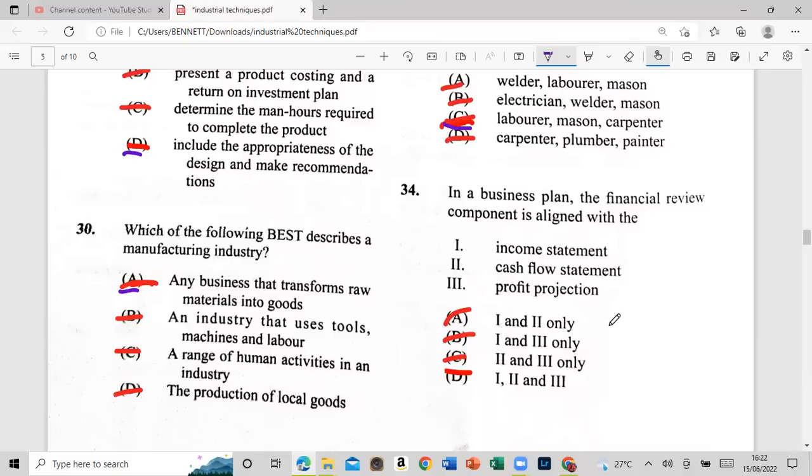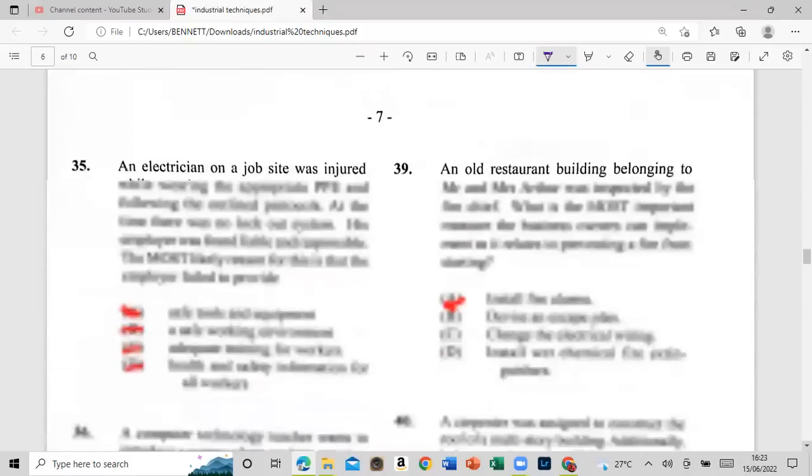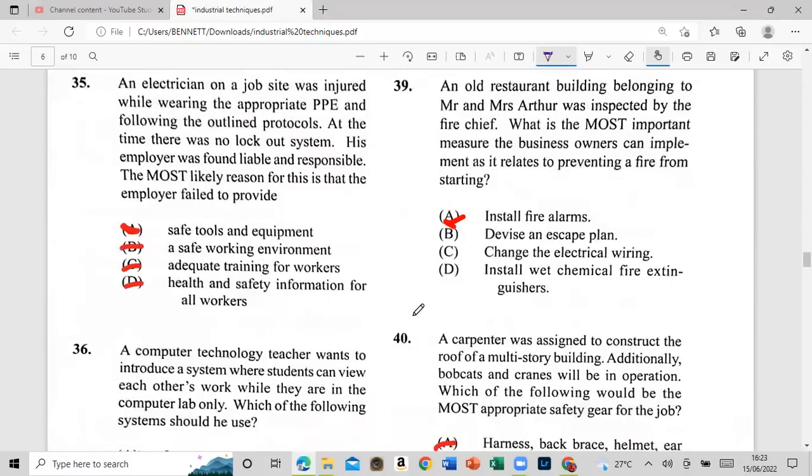In a business plan, the financial component is aligned with one: income statement, two: cash flow statement, three: profit projection. What's the answer, guys? Let's go. And that would be two and three on it. Did you guys get see? Let's go. Remember, I wanted this video to be short, guys. Let's take one.